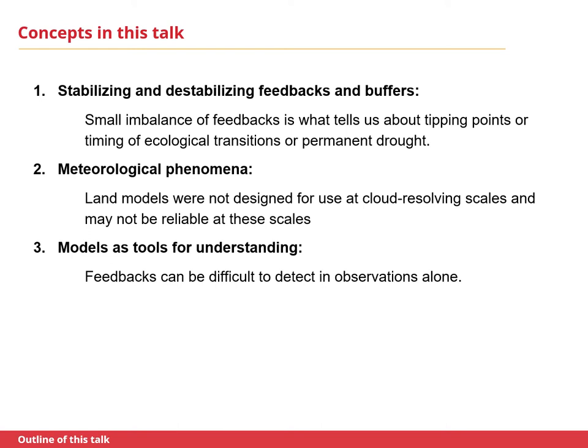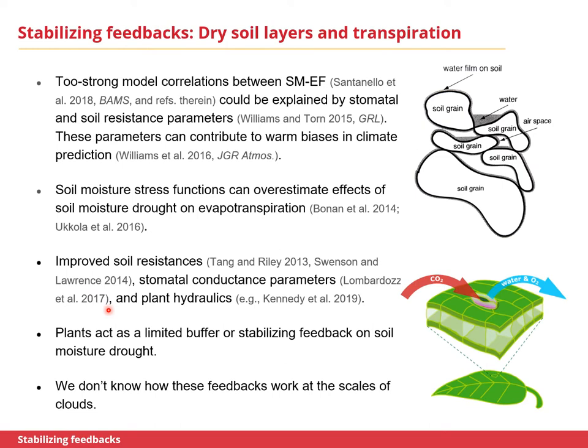The second concept is that meteorological phenomena have largely been parameterized in the past — not explicitly resolved in global earth system models — but will be over the next five to ten years. These are phenomena like cumulus clouds and convective storms. The challenge is that land models were not designed for use at these scales and may not be reliable at them. The last concept is that even when models are wrong, they are still useful for understanding land-atmosphere interactions, because feedbacks can be very difficult to detect from observations alone. Models missing processes can make predictions that, when tested against observations, tell us how the system actually works.